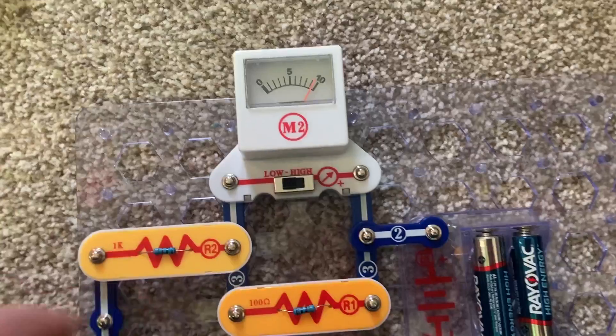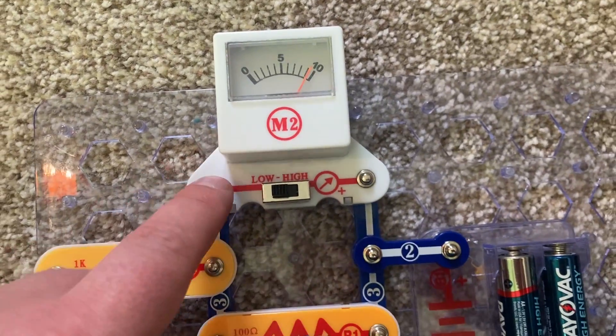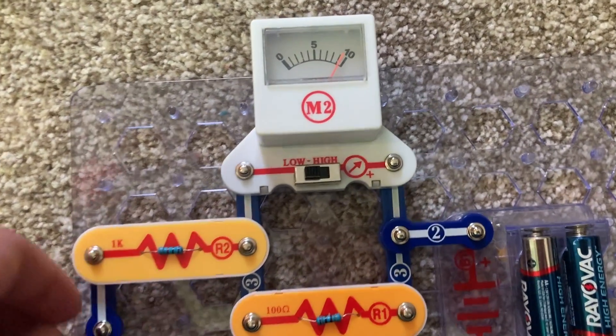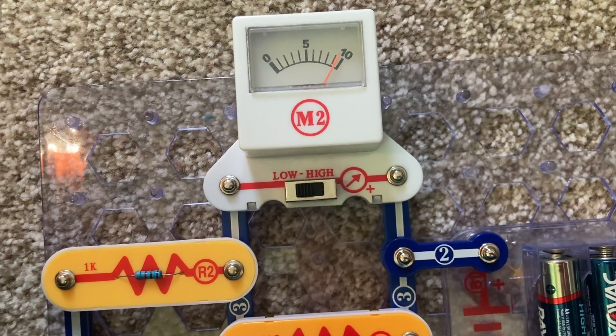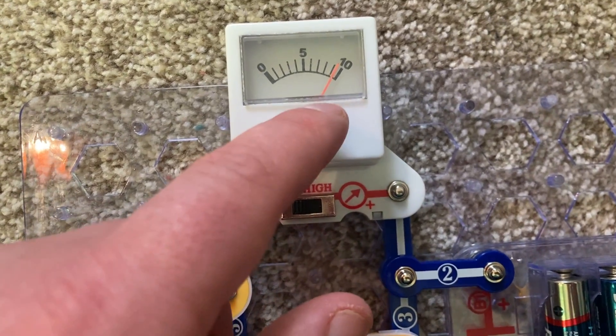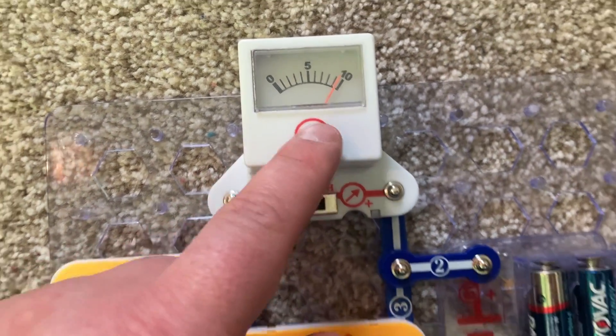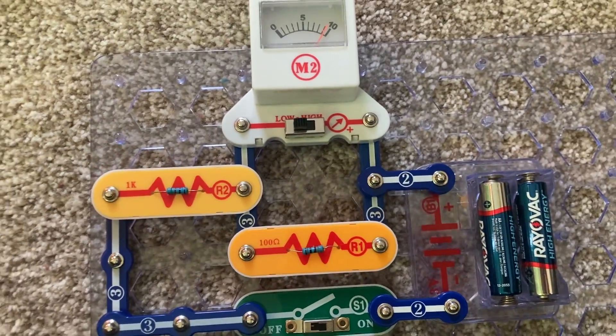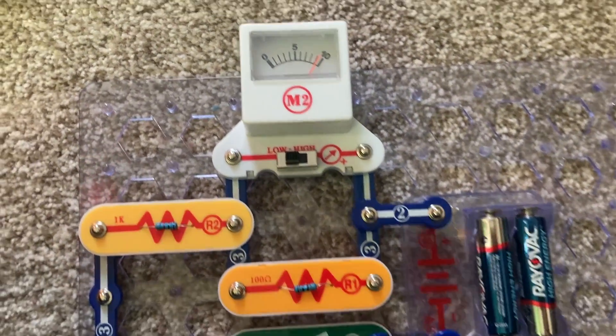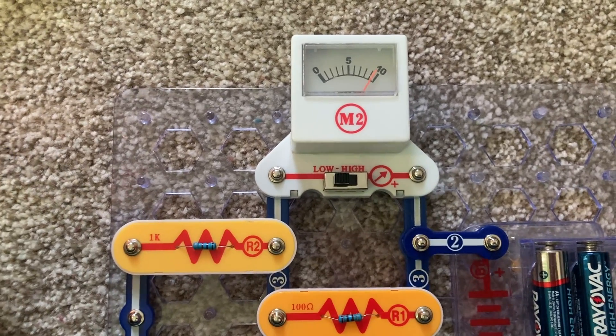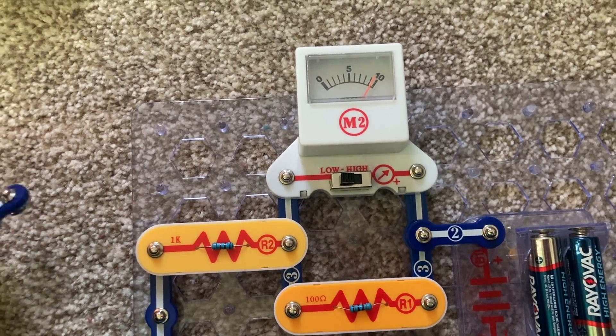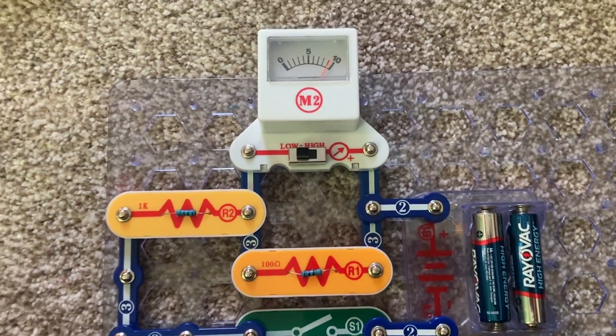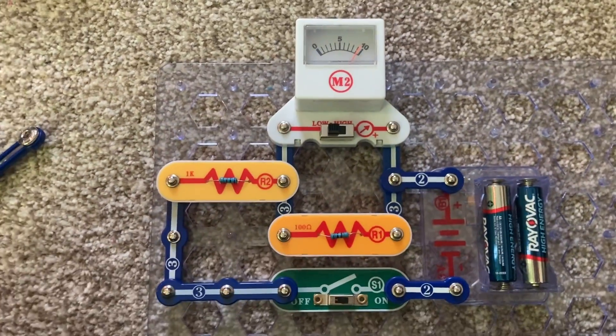And you can use this to measure electrical current in any given device or component. And it contains a magnetic field and it contains a fixed magnet and a movable coil around it. And the coil moves or deflects when an electric current flows through it. And then the coil's connected to the pointer to show how much current is flowing through that particular device or part.